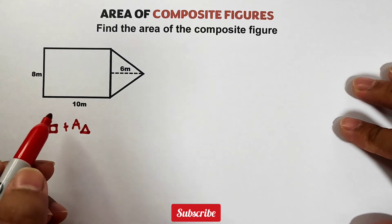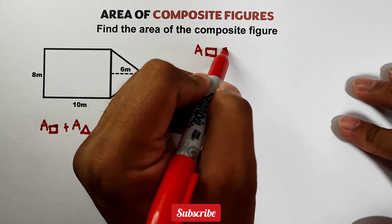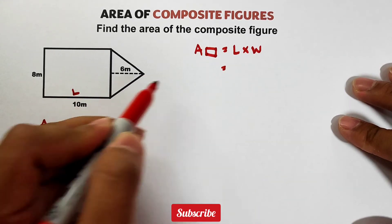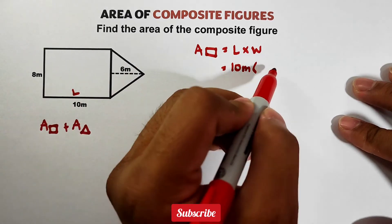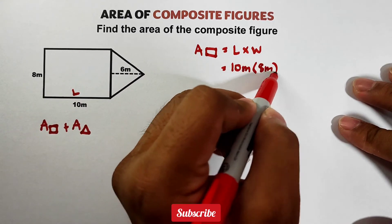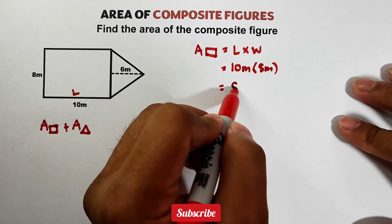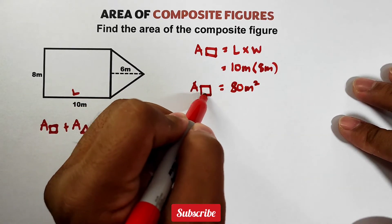Separately, calculate. Area of rectangle, length times width. Your length is 10 meters, times your width is 8 meters. Multiply them. 10 times 8 is 80, and this is 80 meters squared. This is now the area of our rectangle.